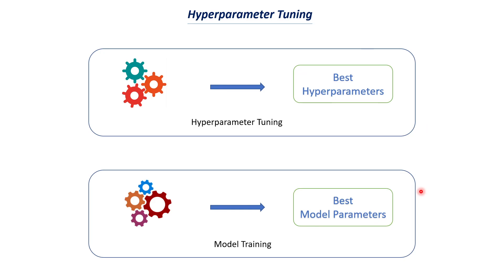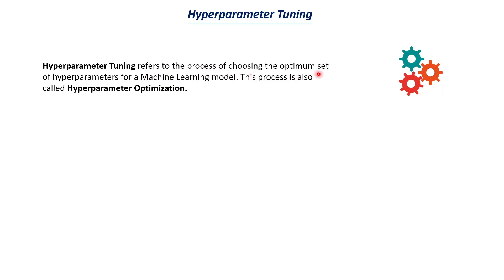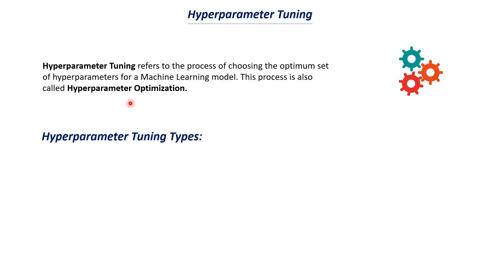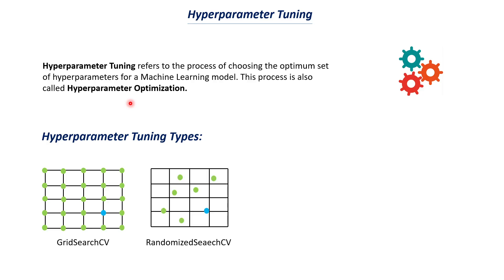As mentioned, in hyper-parameter tuning we have two main important techniques. Hyper-parameter tuning refers to the process of choosing the optimum set of hyper-parameters for a machine learning model; this process is also called hyper-parameter optimization. What we are doing is tuning the hyper-parameter values so that we can get the optimum set of values — meaning the highest accuracy for our machine learning model. We will do this for all the machine learning models we work on. The two types of hyper-parameter tuning are grid search CV and randomized search CV.